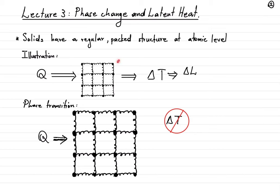As we supply energy to such a structure, what happens is that these atoms at the nodes will begin to vibrate. As we increase the temperature, they will have more kinetic energy — remember, temperature is proportional to average kinetic energy. So they will begin to vibrate more and more, and effectively they will move away from one another. The separation becomes larger and larger. If you think of the bond as a spring, there comes a point where the spring cannot be stretched any further — the spring has been stretched to its maximum.